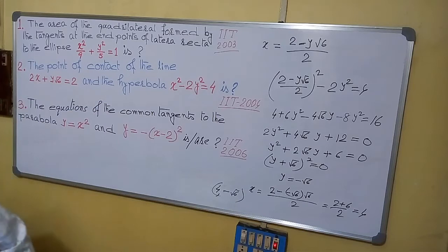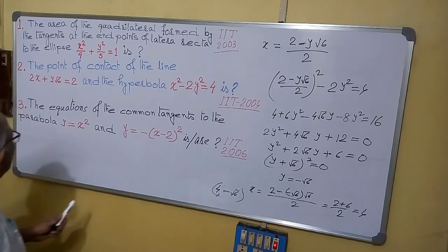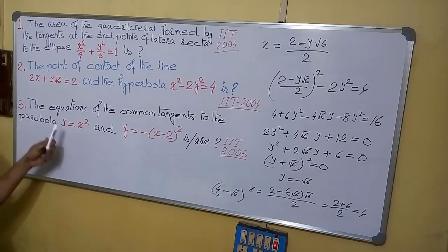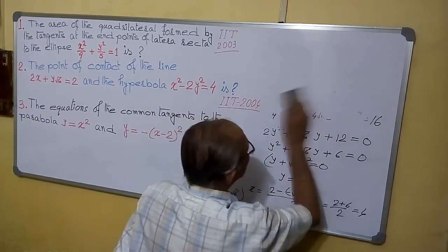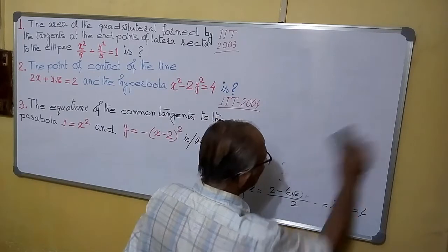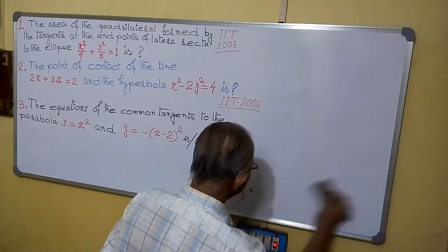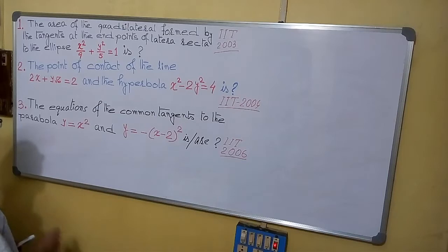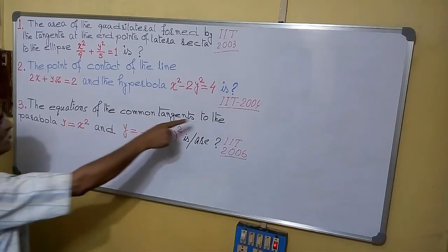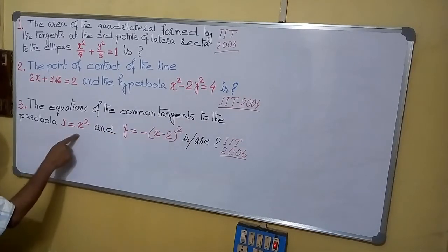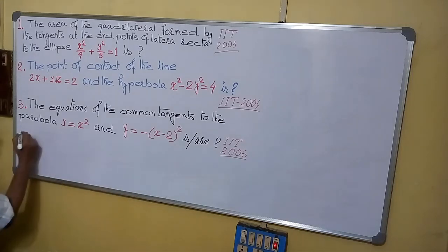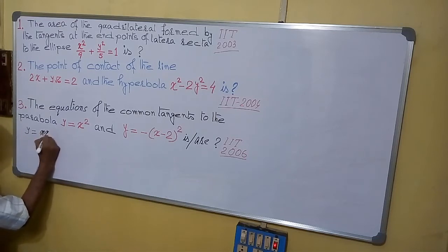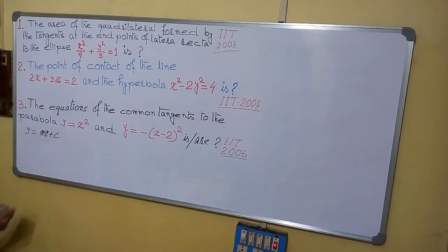In this way, we can find it in comparatively less time. Now we are going to do the third sum. The equation of the common tangent to the two parabolas. Let us assume y = mx + c to be the common tangent.